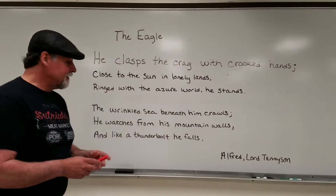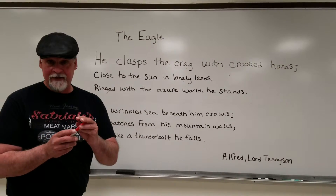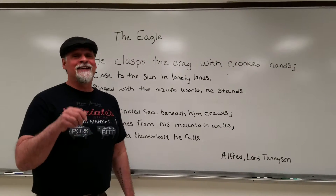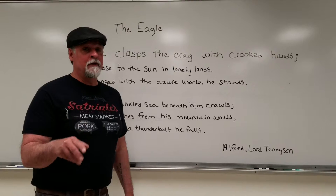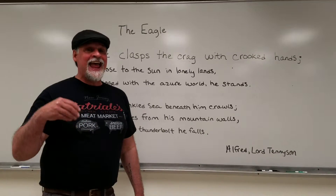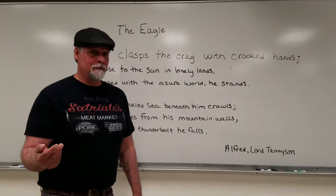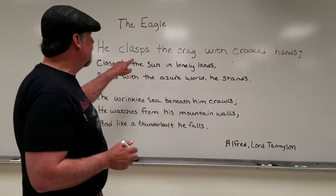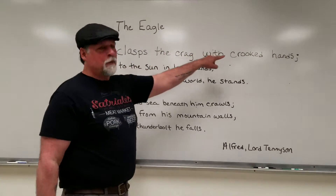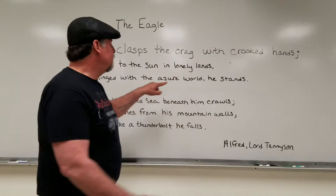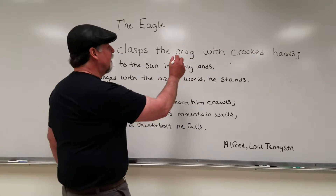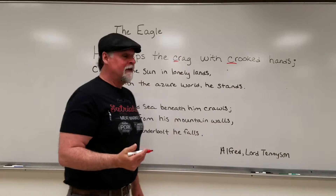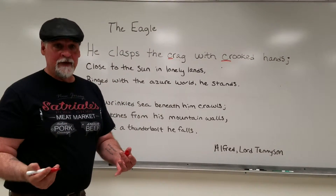Now let's talk about the sonic devices. I'm going to use different colors for each one. Alliteration is a repetition of consonant sounds at the beginning of a word, or at the first accented syllable of a word. So let's see what we have here. In the first line, even though we have three words beginning with C, it's really the CR in 'crag' and in 'crooked' that's repeated. So that's an example of alliteration.